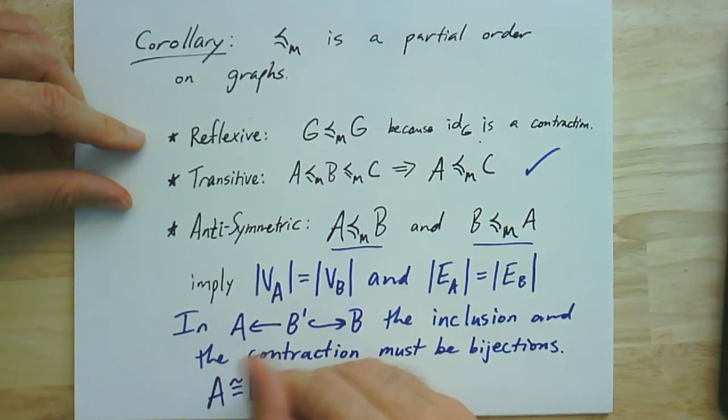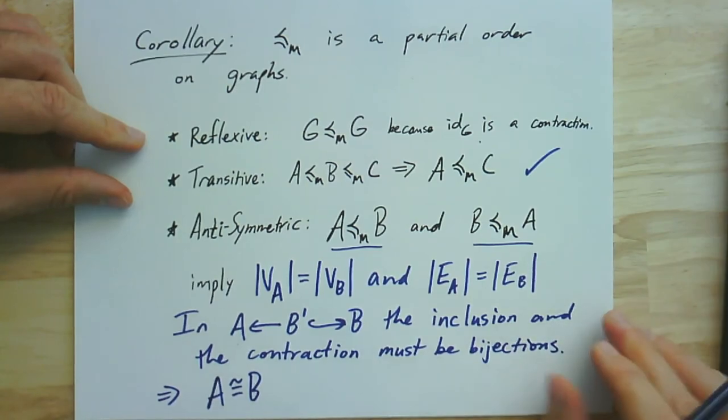All right, so we're going to conclude that these, in fact, are isomorphic graphs.